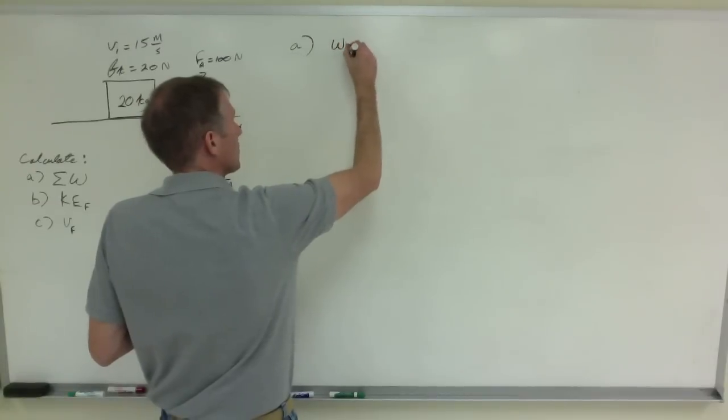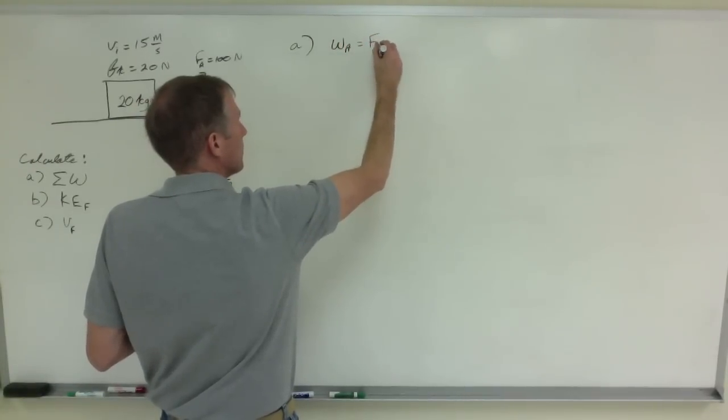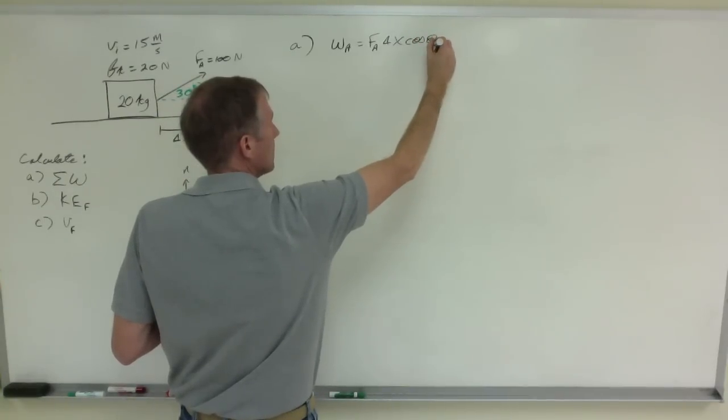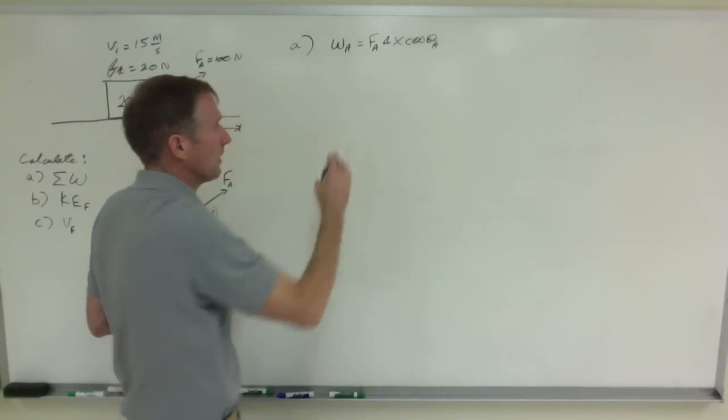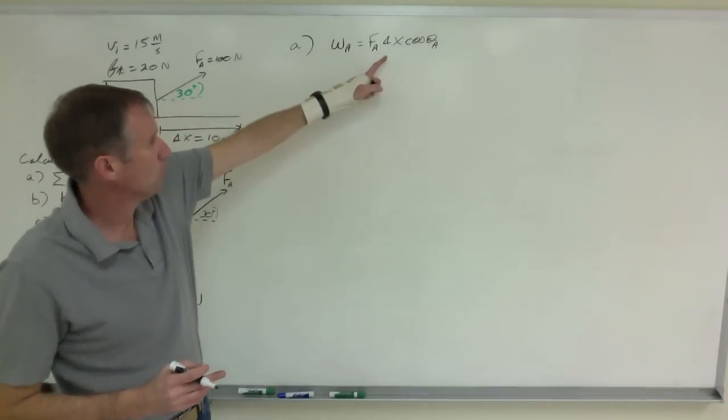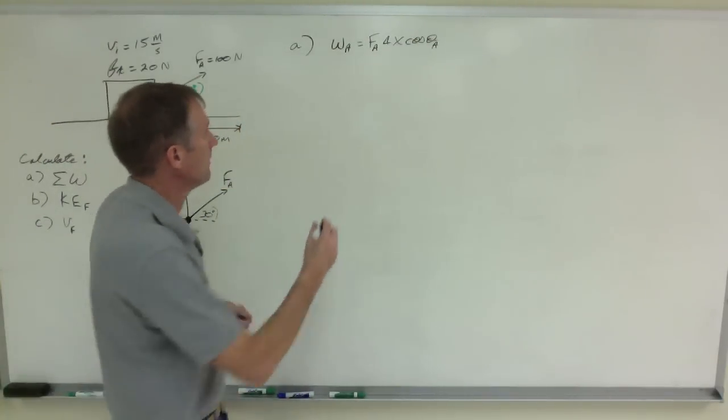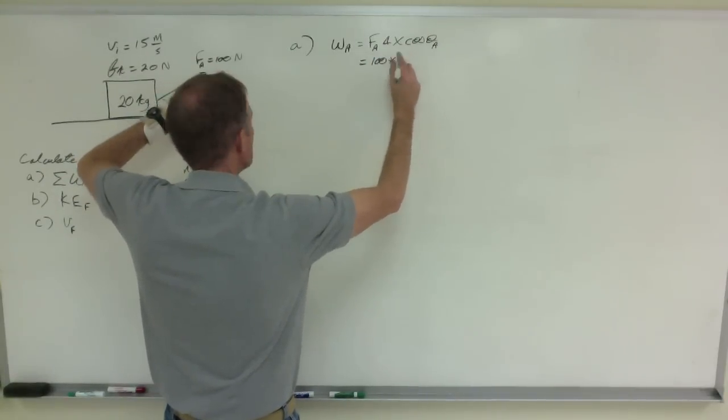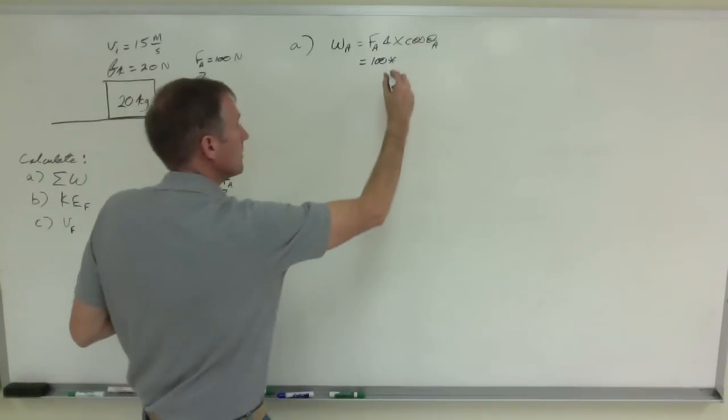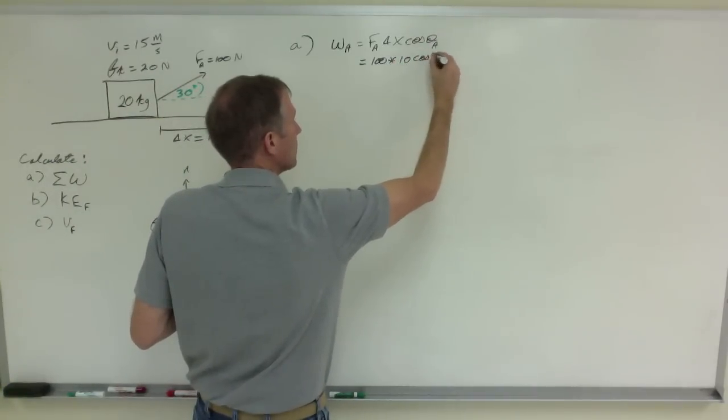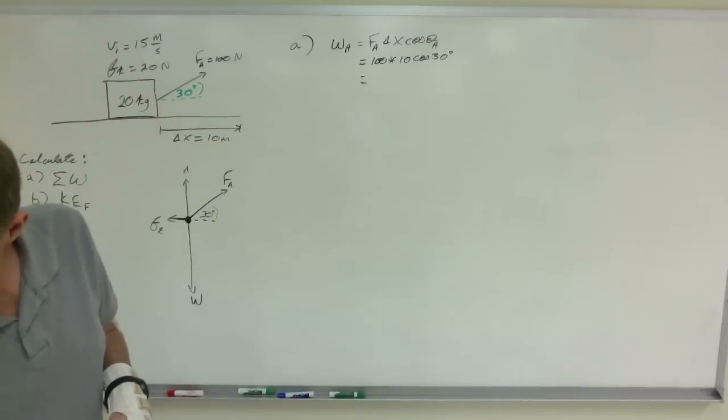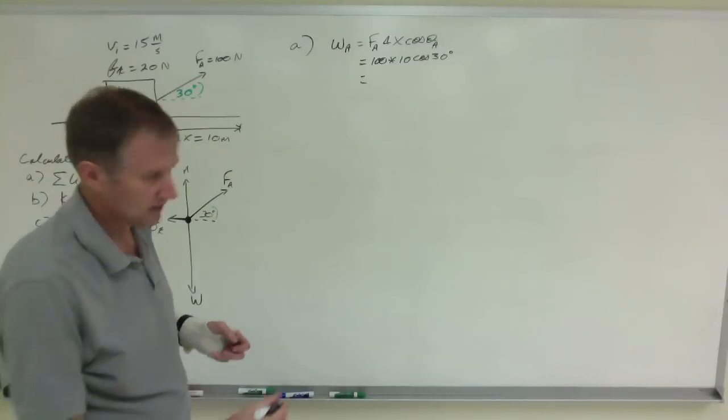To calculate the work done by the applied force you multiply the applied force times delta x times the cosine of the angle between the applied force and the displacement. Remember that this is always the angle between these two vectors. That will be 100 times the displacement of 10 meters times the cosine of 30 degrees. And that has, I've already calculated it, it came out to be 866 joules.